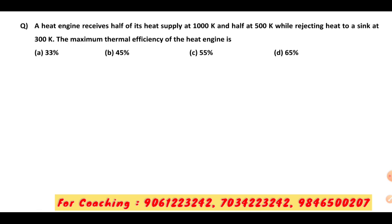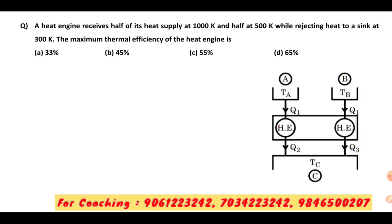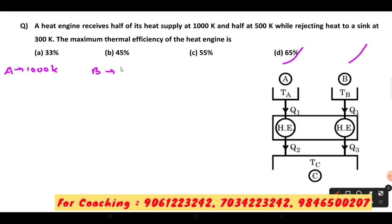The question is: when you have a heat engine, one source is at 1000 Kelvin and the other is at 500 Kelvin. We need to represent a line diagram. Section A is created by the source at 1000 Kelvin region. For B, it is created by the section at 500 Kelvin.